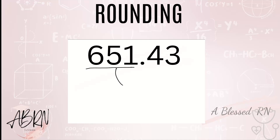Let's round this to the nearest whole number. We'll start at everything on the left of the decimal, then go right to the four. That is four or below, so it is a no-go — that number will stay the same. And then everything after the decimal goes away.